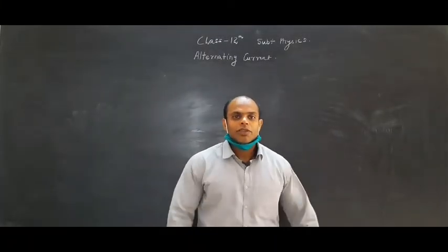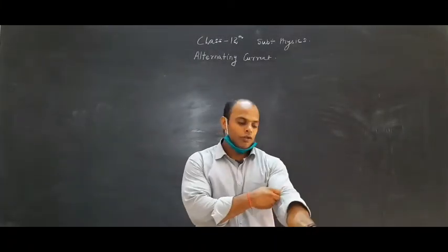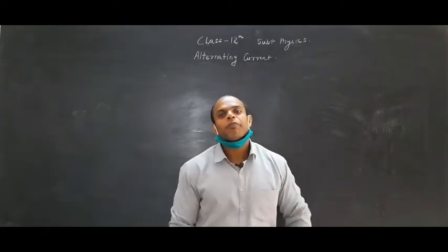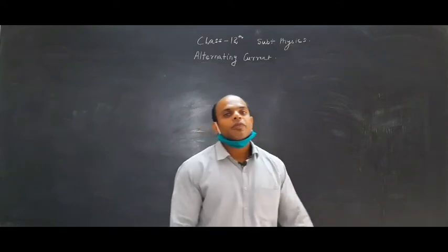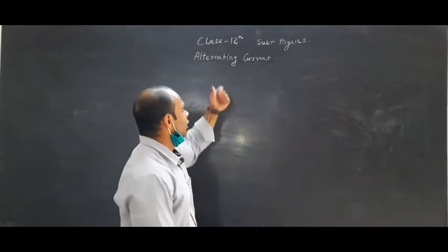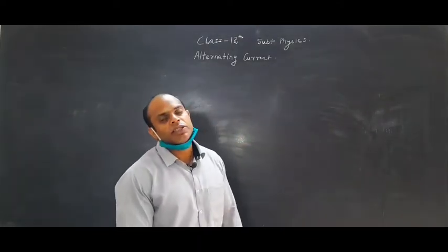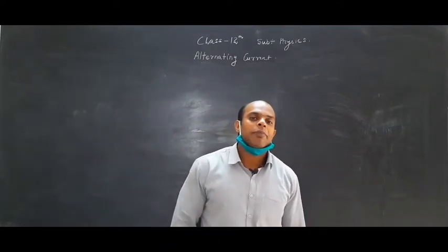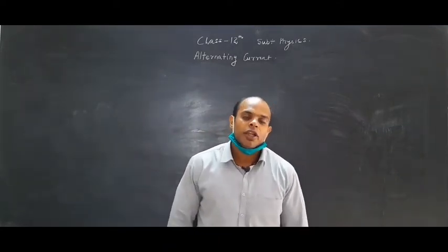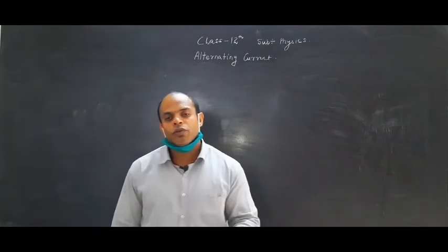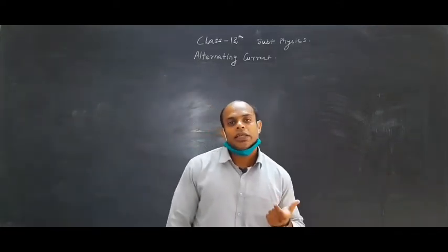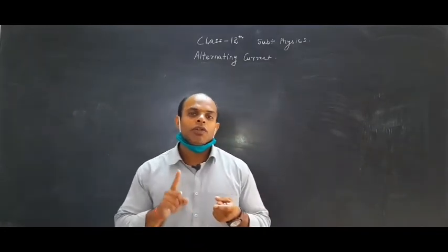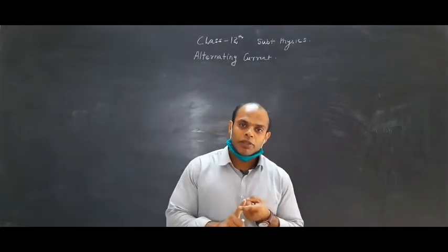Hello everyone. Once again, good morning, good afternoon and good evening. We are going through with alternating current and in the previous lecture we have done till I_rms value of current. Now we will go through with the circuit diagrams of AC circuits. So in the circuit we will use today circuit type number 1.